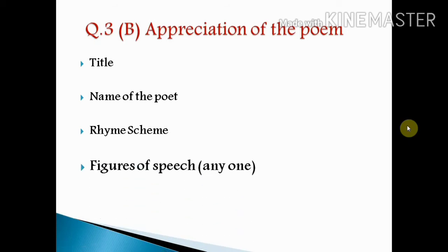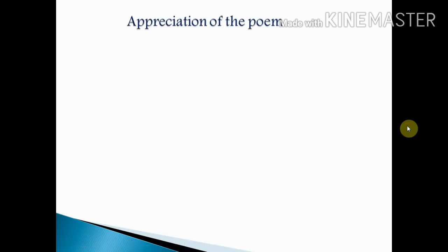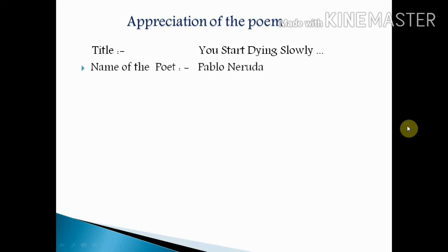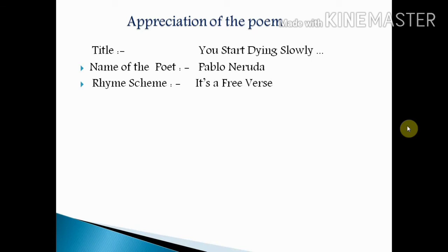The points also include figures of speech — any figures of speech that you come across — and the last point is theme or central idea of the poem. With the help of these given points we will go for appreciation of the poem. The title of the poem is 'You Start Dying Slowly' and the name of the poet is Pablo Neruda. Regarding the rhyme scheme, this poem doesn't have any rhyme scheme.